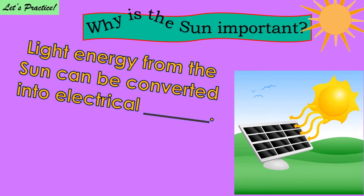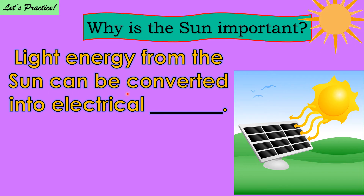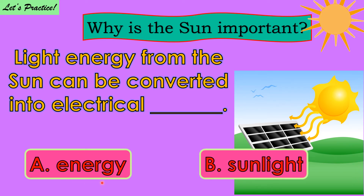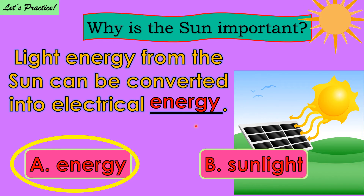Why is the sun important? Light energy from the sun can be converted into electrical blank. Choose between A, energy, and B, sunlight. One, two, three. That's very good! It's energy!